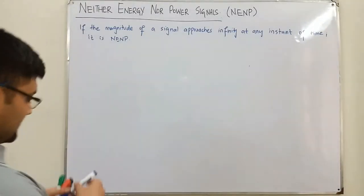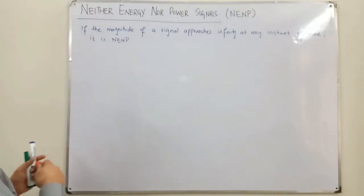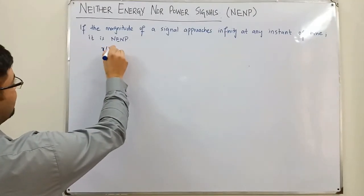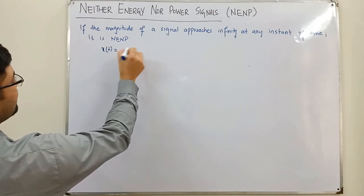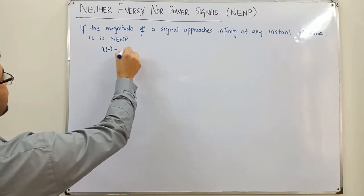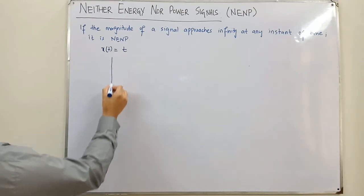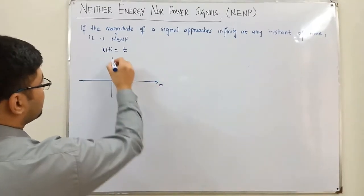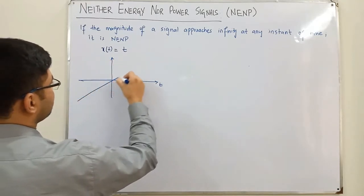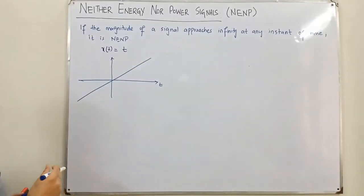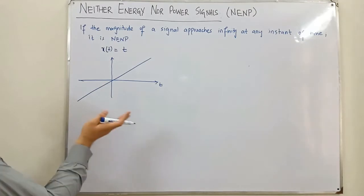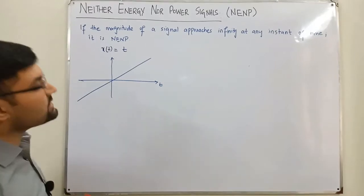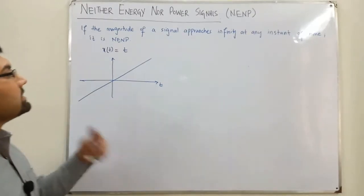For example, if we have a function x(t) = t — similar to y = x — this function reaches negative infinity on the negative side and positive infinity on the positive side. Since it is reaching infinity, this is a neither energy nor power signal.